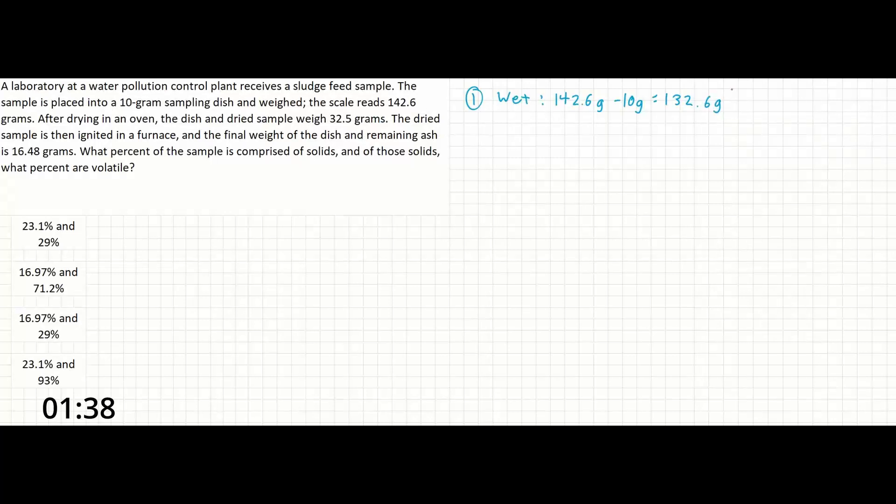Next, the sentence about the oven indicates that this is the information for the dry sample. So the dry sample is 32.5 grams minus the weight of the dish to get 22.5 grams.